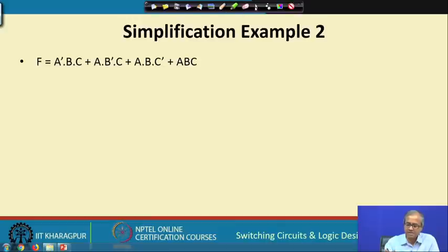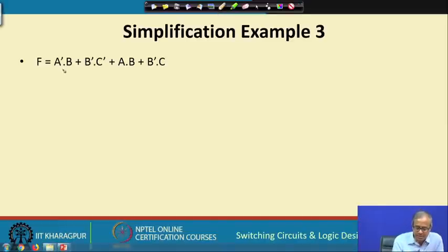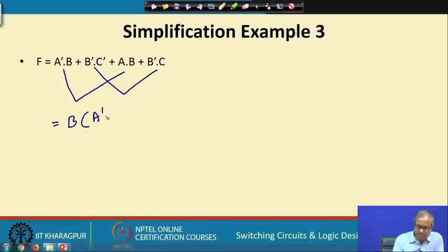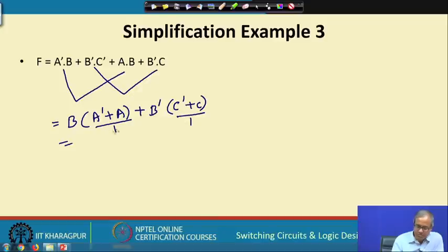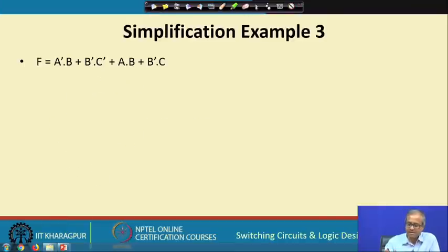Let us take another example. Consider ā·b + a·b + b̄·c̄. We can combine the first two: taking b common gives (ā+a)·b = 1·b = b. The last two terms: taking b̄ common from the original gives b̄·(c̄+...). Actually, combining ā·b + a·b = b, and b + b̄ gives b + b̄ = 1, and 1 AND the remaining term gives a constant expression — it minimizes to 1.